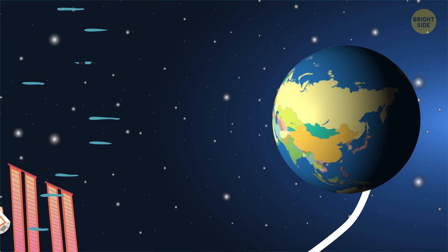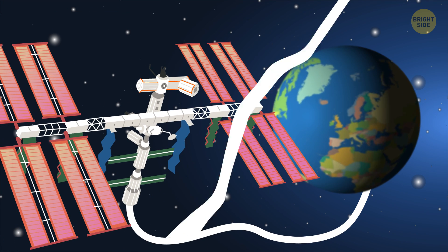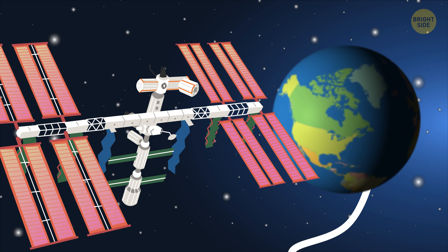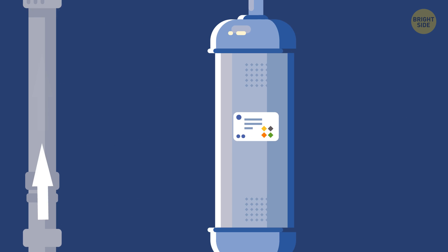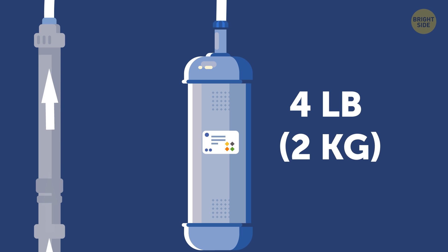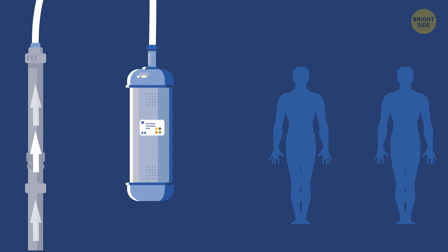So, the ISS is completely independent of the Earth as far as its water and air reserves go? Unfortunately not. Thanks to this complex system, it's possible to produce a little over 4 pounds of oxygen per day. That's only enough for two people.